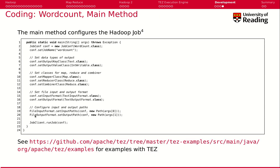In our main function, we get a job configuration, you can set job names, we set the input key class, the output key class, the output value class, the mapper, reducer, and combiner classes, the input format, the output format, the input path which directs it to read all the files, the output file, and so on. Then you say run the job. When you compile it into a jar file, this can be run, and you get hopefully the right output.